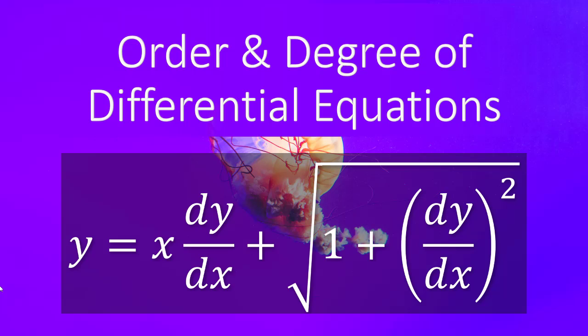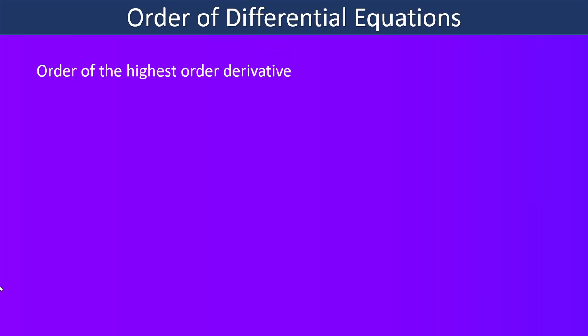Welcome. In this lecture we will learn how to find the order and degree of a differential equation. The order of a differential equation is the order of the highest order derivative appearing in the equation. For example, in the equation d²y/dx² + 3(dy/dx) + 2y = eˣ, the order of the highest order derivative is 2, so it is a differential equation of order 2.